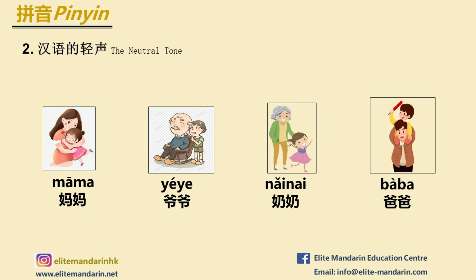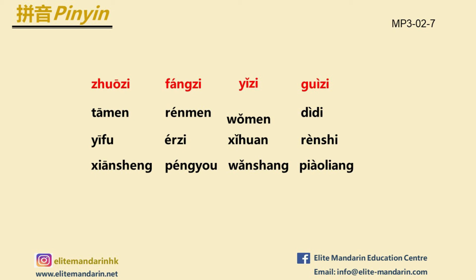Let's do it again: 妈妈, 爷爷, 奶奶, 爸爸. Let's do more exercise. Read the syllables aloud and pay attention to the neutral tone: 桌子, 房子, 椅子, 柜子, 他们, 人们, 我们, 弟弟, 衣服, 儿子, 喜欢, 认识, 先生, 朋友, 晚上, 漂亮.